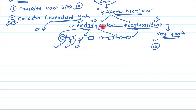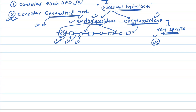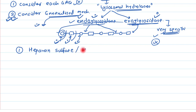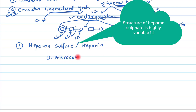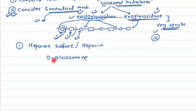Our strategy is to first make a list of all possible monosaccharide units that can occur in any glycosaminoglycan. Let's consider two or three compounds. First, let's take heparan sulfate — a similar structure is also seen in heparin.